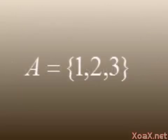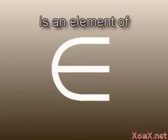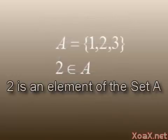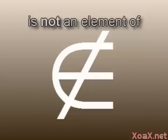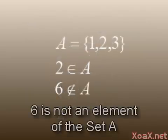For convenience, we will often assign names to our sets like this letter A. Also, we will use this symbol to specify that something is an element of a set. For example, we read this as 2 is an element of the set A. We will use the same symbol with a strike through it to indicate that something is not an element of a set. This is read as 6 is not an element of the set A.